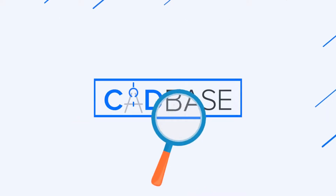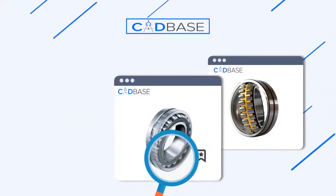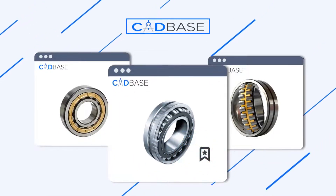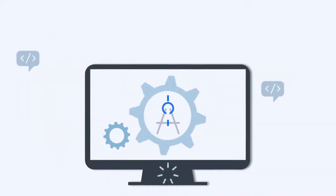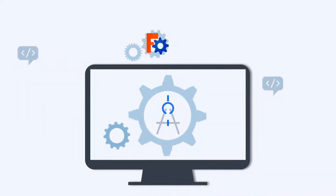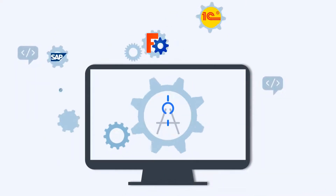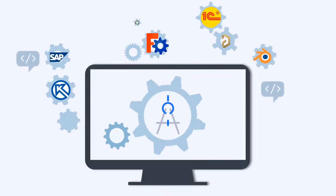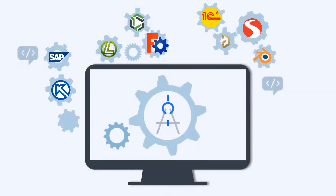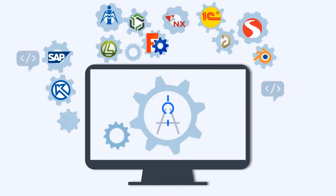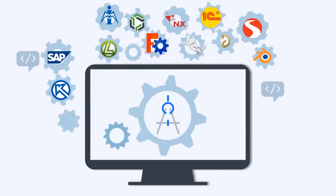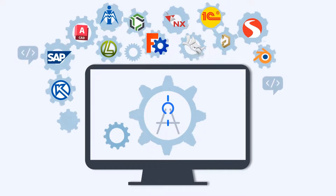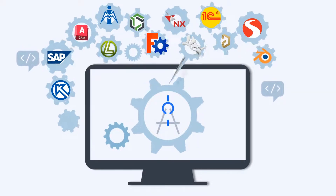They can also get a source of orders for product development and research. The OpenAPI allows you to integrate CatBase with various automated control systems and CAD systems, enabling engineers to obtain 3D models and drawings of components from the systems they use, simplifying the search and use of components in design.